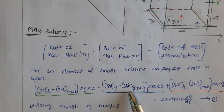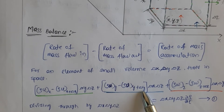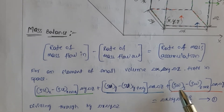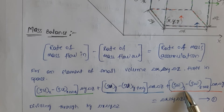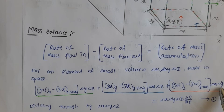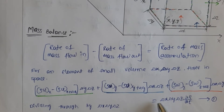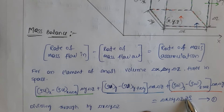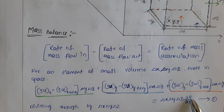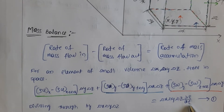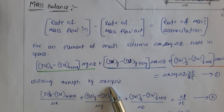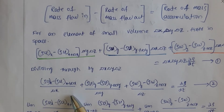Similarly in the y direction: rho·v at y minus rho·v at y plus delta y, multiplied by area delta x·delta z. Plus in the z direction: rho·w at z minus rho·w at z plus delta z, multiplied by delta x·delta y. This equals the accumulation of mass in the fluid element, that is delta x·delta y·delta z multiplied by d(rho)/dt.